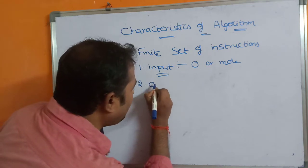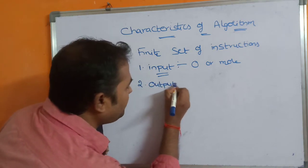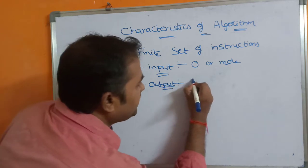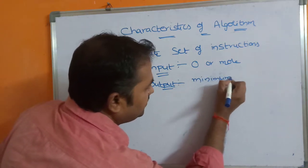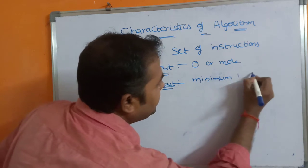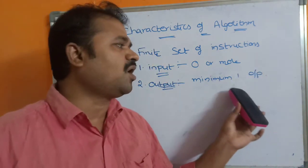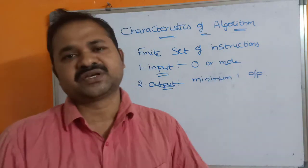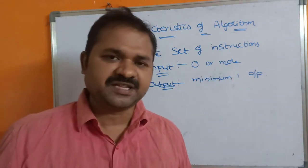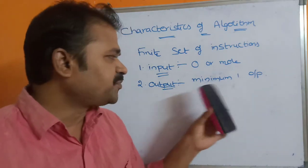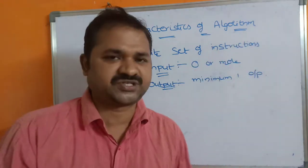The next characteristic of an algorithm is output. An algorithm must produce a minimum of one output — that means one or more number of outputs. Without output we cannot write any algorithm, so an algorithm must produce at least one output.